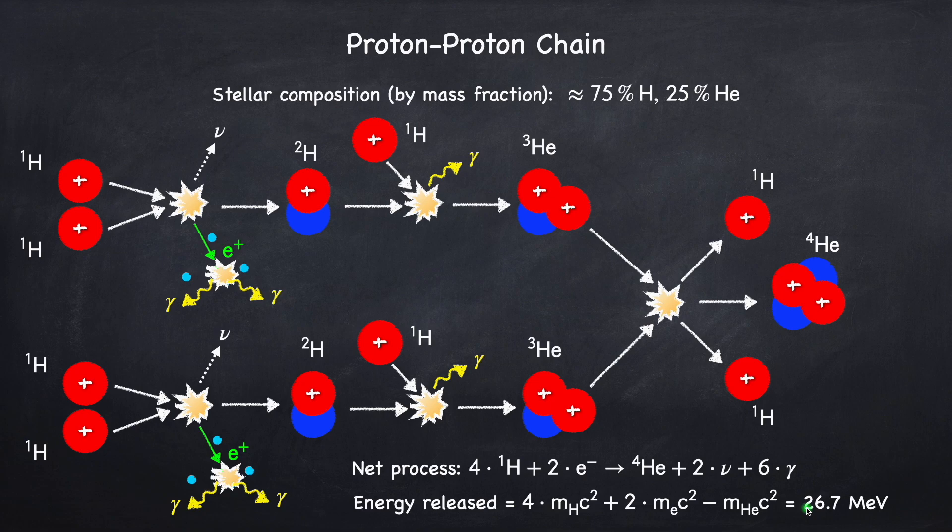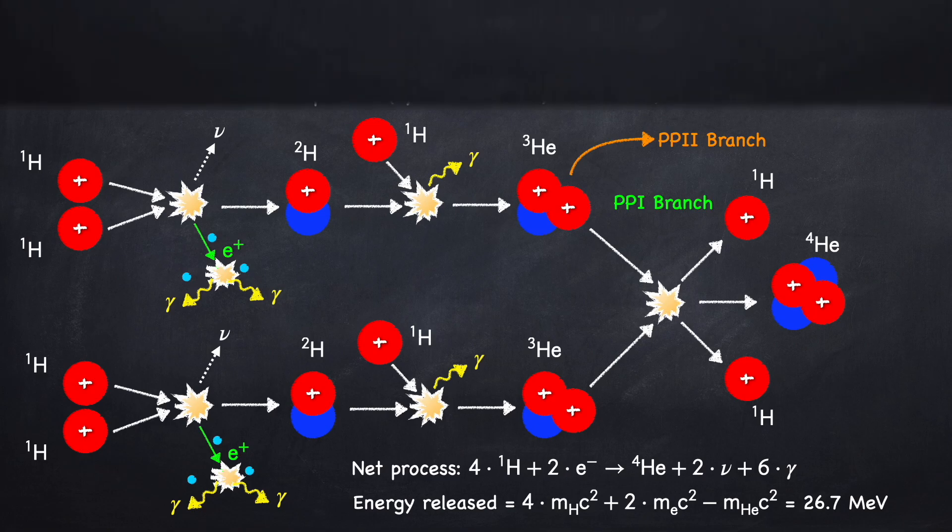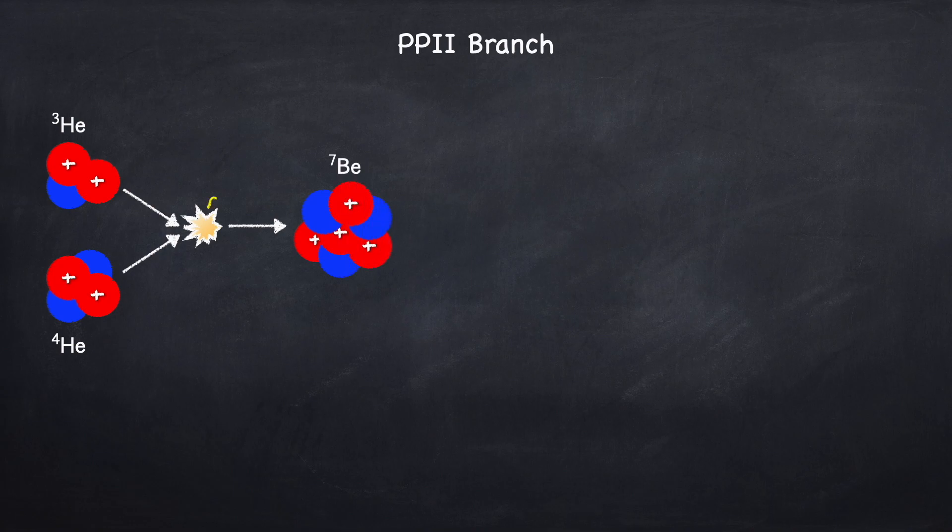But all this is actually just one branch of the proton-proton chain. It's called the PP1 branch. But there are other branches. So another branch will fork off when you get to helium-3, and this is the PP2 branch. So let's take a look at that. So the PP2 branch diverts once you get to a helium-3. In the PP1 branch, it bumped into another helium-3. Now instead of bumping into a helium-3, it's going to bump into a helium-4, and it's going to fuse to beryllium-7.